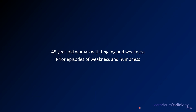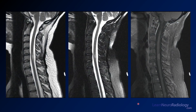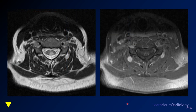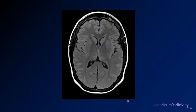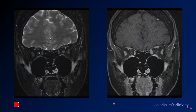The next case is a 45-year-old woman with tingling and weakness, with prior episodes of weakness and numbness — a very similar history. We have cervical spine imaging: T2, T2 fat-sat/STIR, and a post-contrast fat-saturated image. Axial images through the central cord show something a little unusual about the spinal cord. A brain FLAIR image looks pretty normal, and images through the orbits allow a look at the optic nerves.